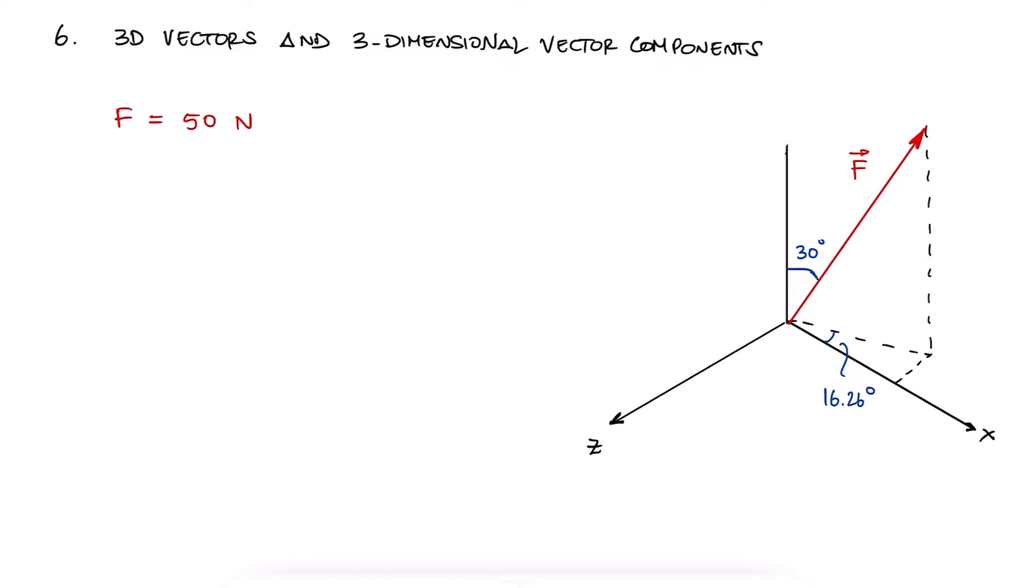The y component of f would be equal to 50 cosine of 30, since the y component is the adjacent side and therefore cosine of the 30 degree angle.